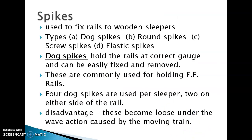Next, spikes. Spikes are used to fix rails to the wooden sleepers. There are four different types of spikes: dock spike, round spikes, screw and elastic spikes. Dock spikes hold the rails at correct gauge and can be easily fixed and removed. These are commonly used for holding flat footed rails.